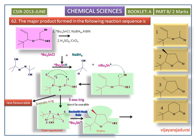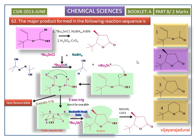When we add Jones reagent, it gives 5-tert-butyl-4-methylfuran-2-one. This corresponds to the second option, so the correct answer is the second option.